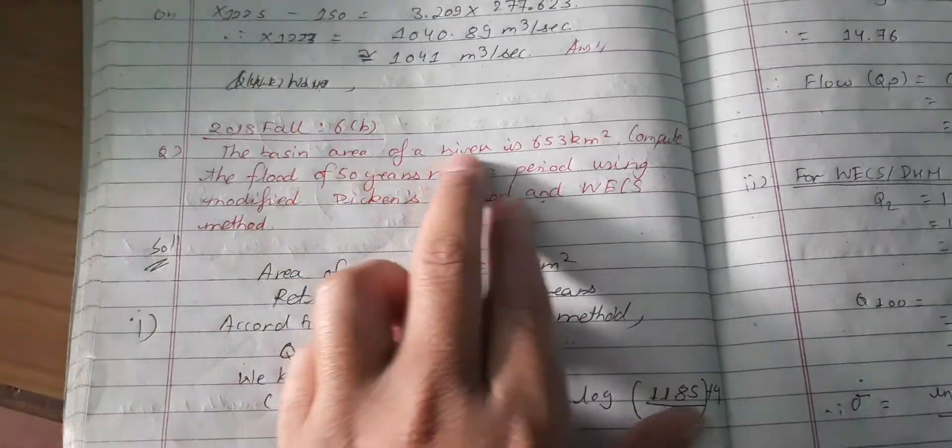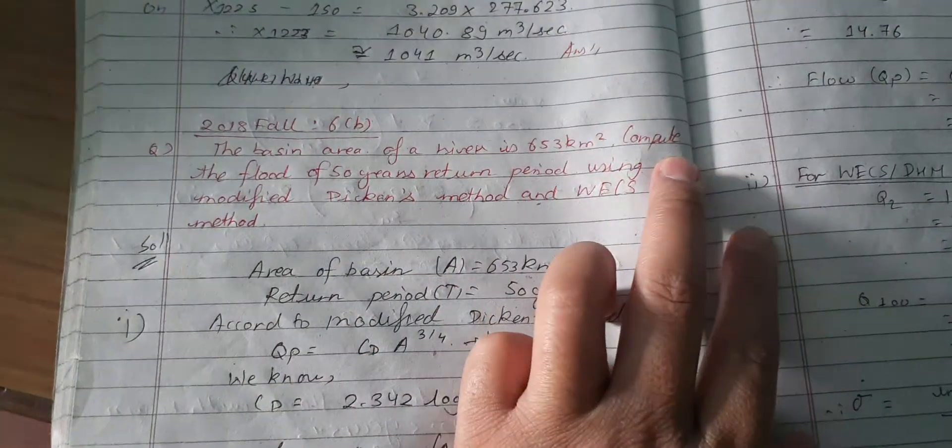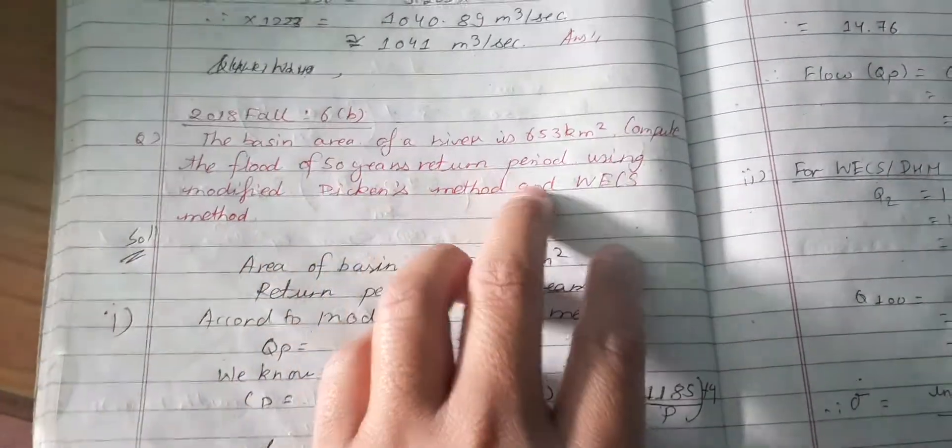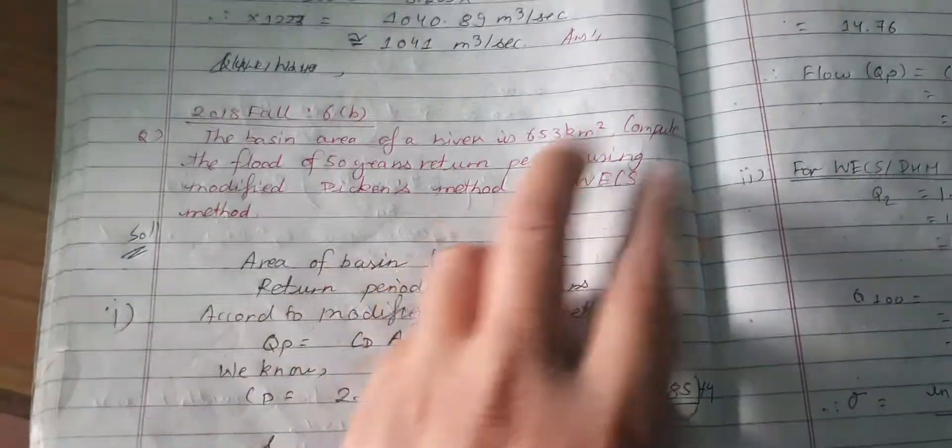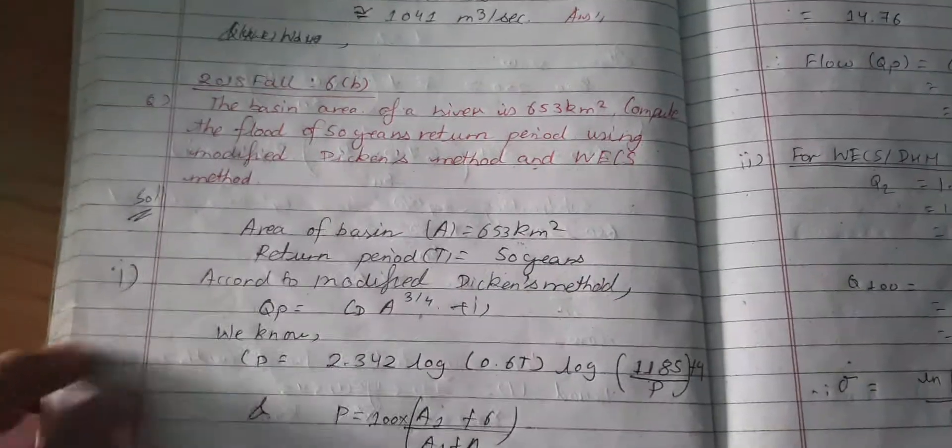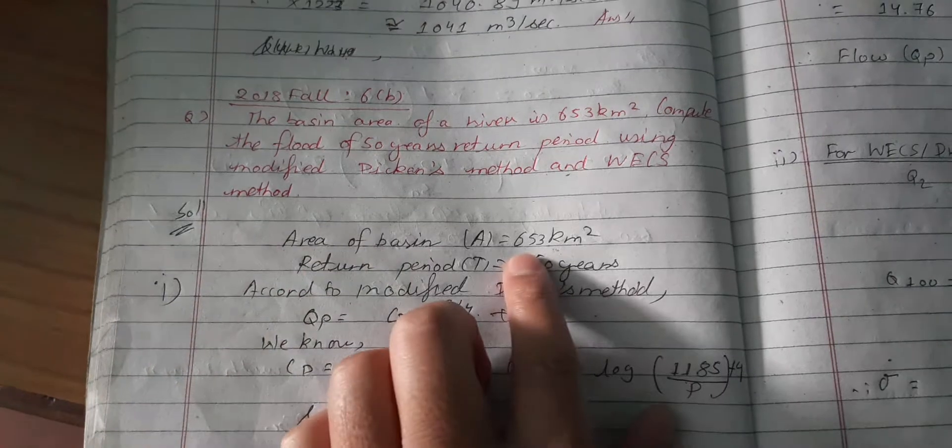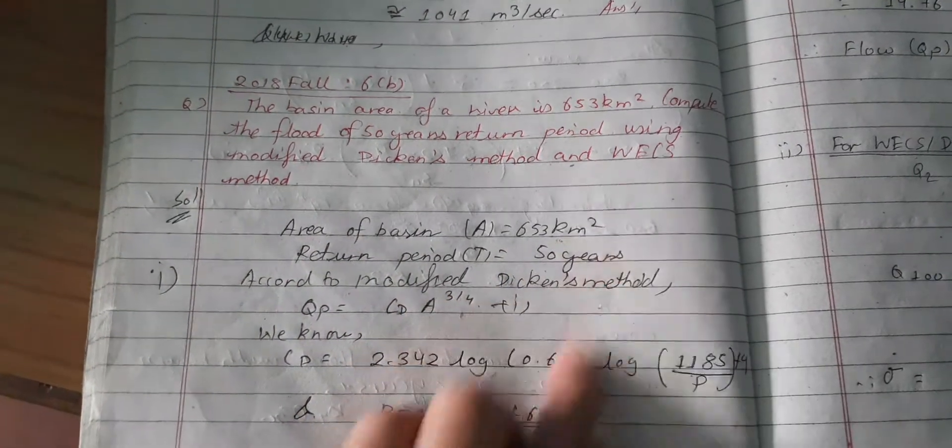The question is: the basin area of river is 653 km² compute the flood of 50 years return period using modified Dickens method and WCS method. The basin area is 653 km² and I am going to calculate the return period for 50 years. Now I am going to take the Dickens method.